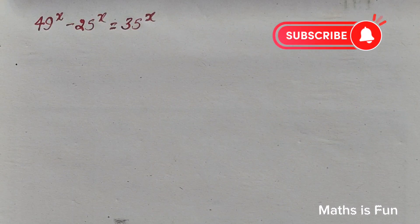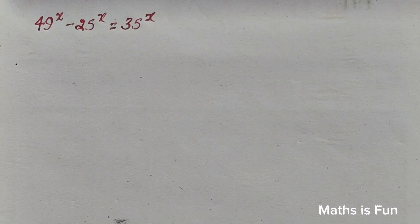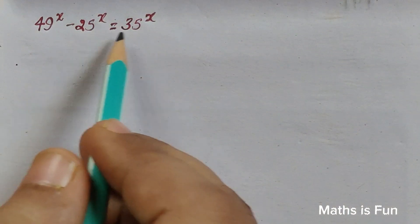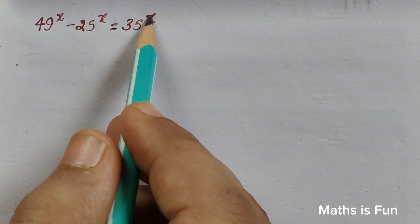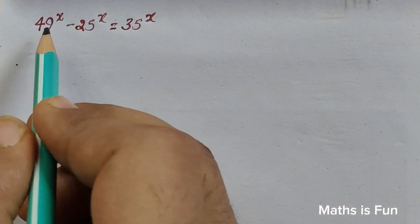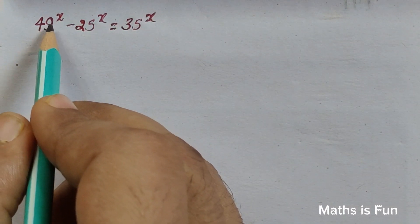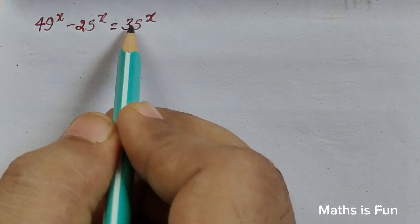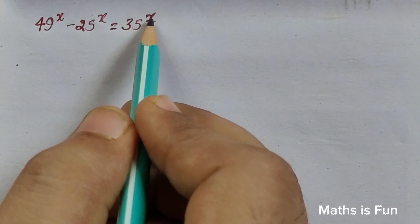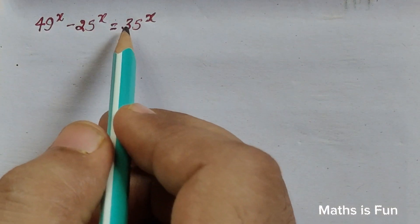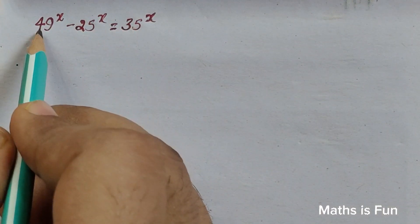Hello math lovers, welcome to the channel. In this video we have an algebra problem. We are given an algebraic equation and we have to find out the value of x. We are given the equation 49 to the power x minus 25 to the power x equals 35 to the power x.